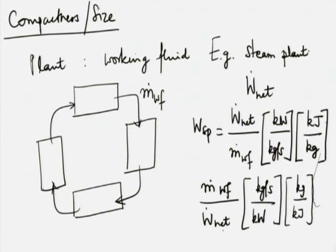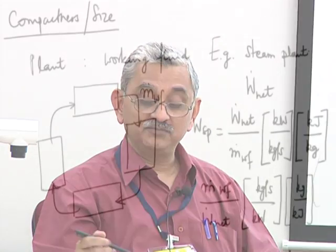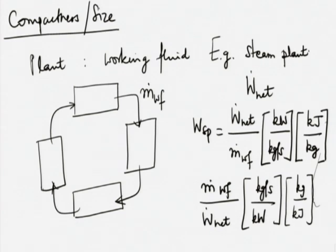If specific output is higher, that means for the same working fluid flow rate I take more output from the plant, or for a given output I need to circulate less fluid. This fluid is not consumed, only circulated. If you need less fluid circulated, that means smaller sizes of equipment — smaller duct sizes, smaller boiler sizes. Something with a smaller steam rate or a higher specific output will be a more compact plant. This has nothing to do with efficiency; it has to do with compactness of the plant.